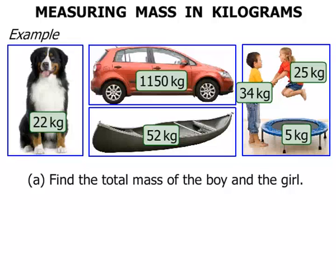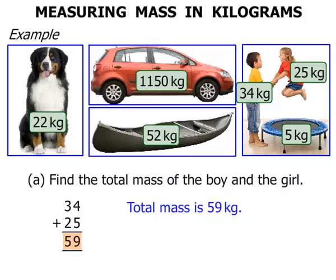We're asked to find the total mass of the boy and the girl. Well, 34 kilograms for the boy and 25 for the girl — let's add them together. We need to find the total. Doing the units column firstly: 4 plus 5 is 9, and 3 plus 2 is 5. So the answer is 59 kilograms.